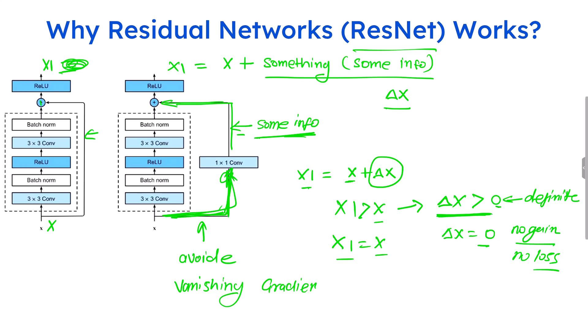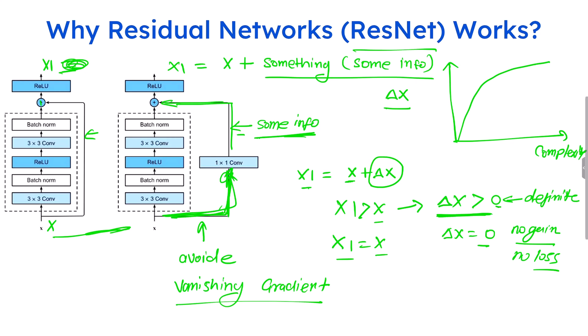Using ResNet is essentially free of cost — there is no parameter increment, there is always some gain, and if there is no gain, there is no loss. It's guaranteed that using ResNet there is no loss. This skip connection avoids the vanishing gradient problem. This was a huge problem which gets avoided. Using these connections, as complexity increases, your training accuracy increases, and your validation accuracy is much less likely to decrease.